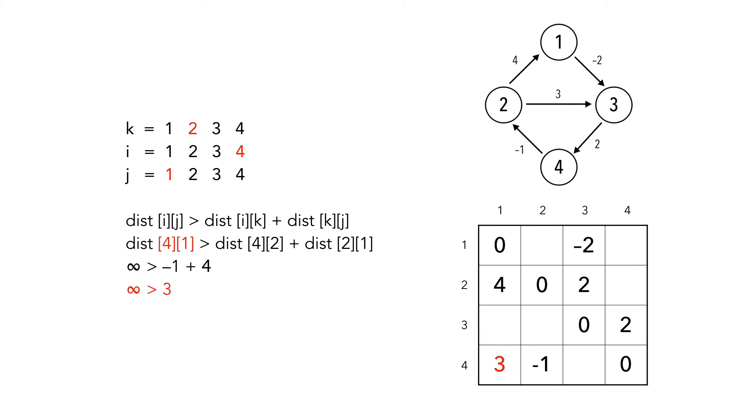By now, I'm sure you see the pattern and flow of the nested for loop. I'll show you the rest of the algorithm without voiceover, and I'll skip the iterations that have no effect on our table.